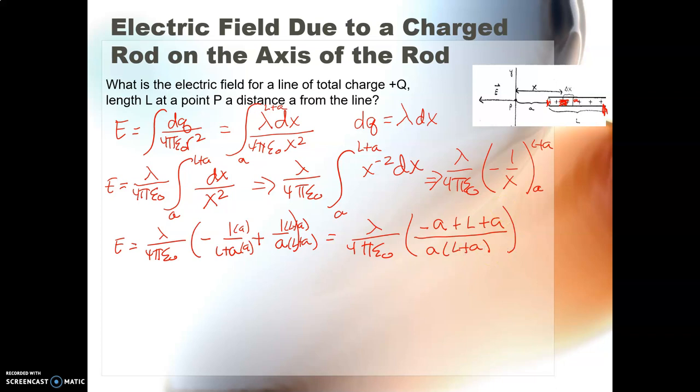All right, so now we can see that actually these a's are going to go away, right? If I have a negative a and a plus a, that's going to go away. And so my maybe final answer is λ over 4πε₀ L over the quantity a times (L plus a).